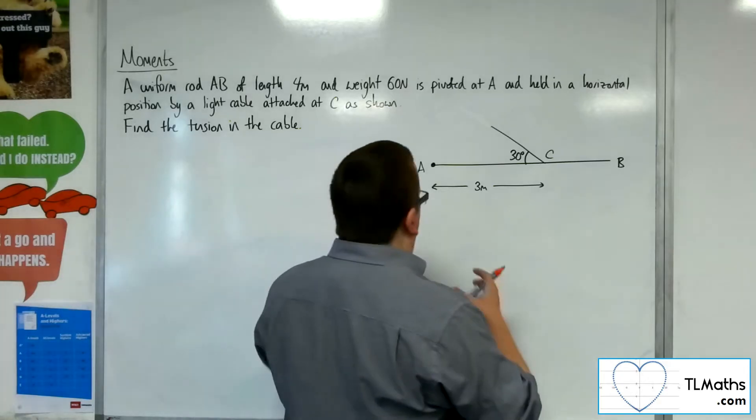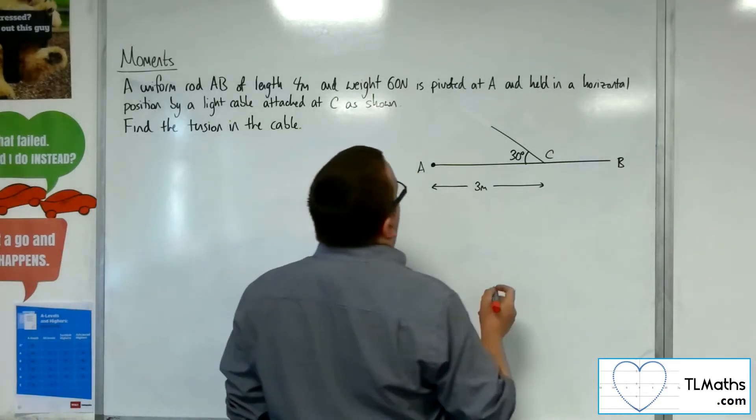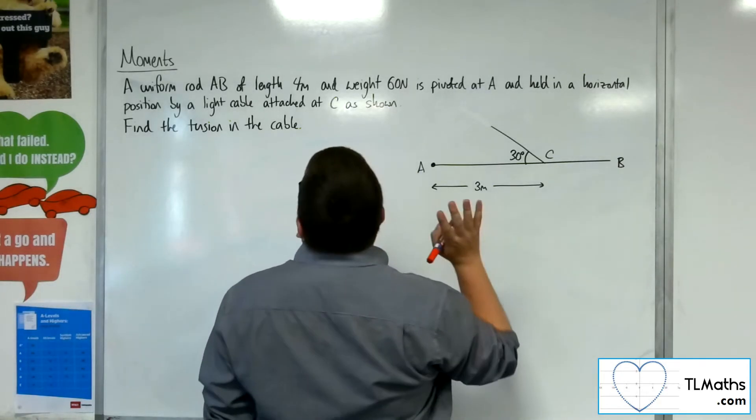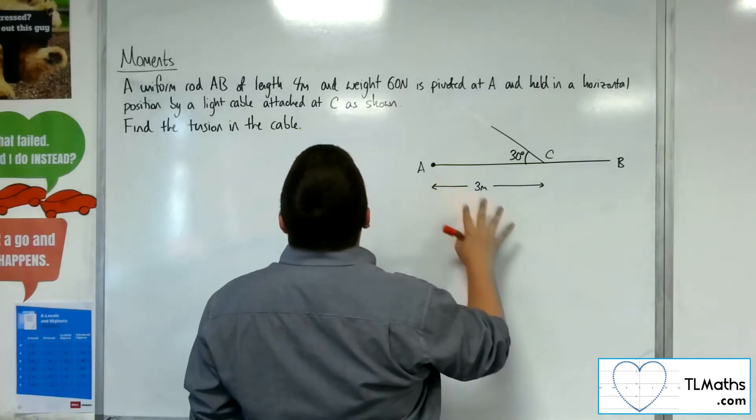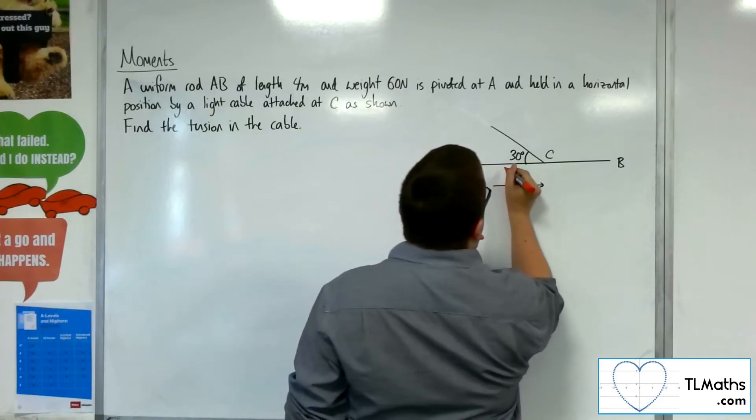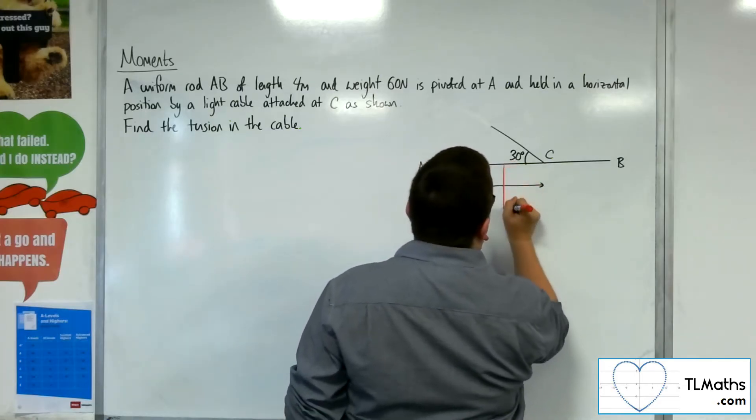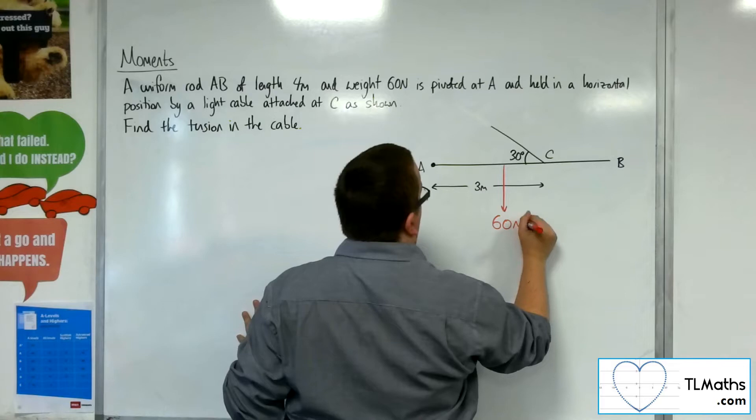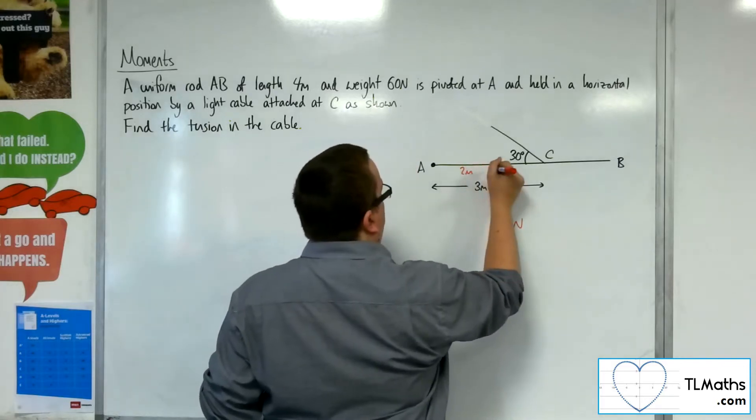If we're thinking about the uniform rod, it has a length of 4 meters and a weight of 60 newtons. That must mean that halfway, that must be where its weight is going through, the center of mass, so that's 2 meters.